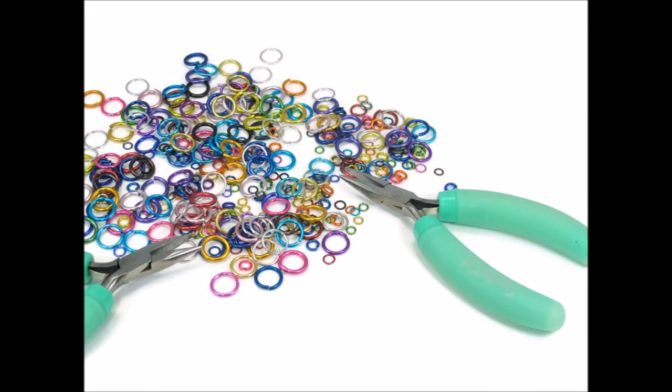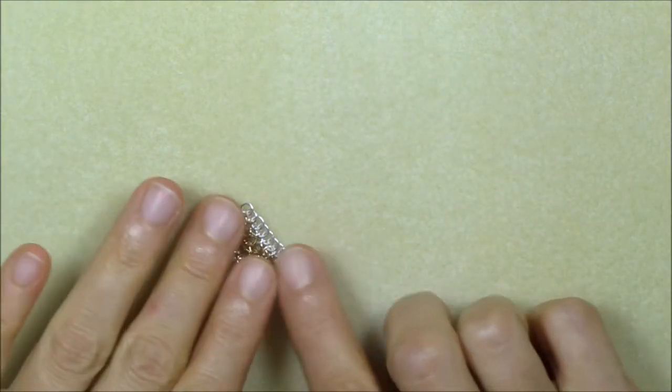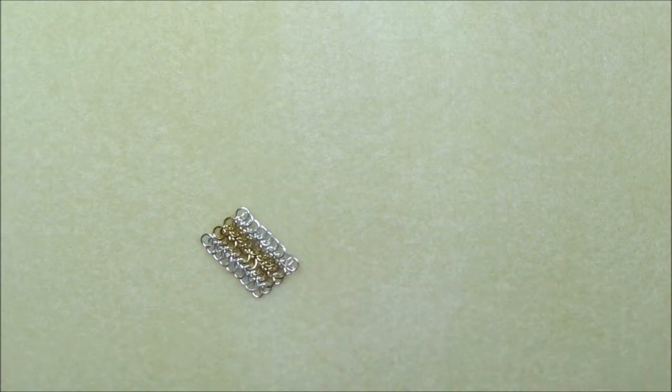Each weave generally has an ideal aspect ratio number. For example, this is a strip of European 4-in-1, which has an ideal aspect ratio of around 4. This piece uses 4 millimeter 22 gauge rings, which have an aspect ratio of 4.3.